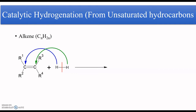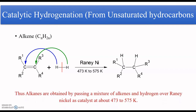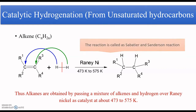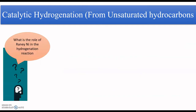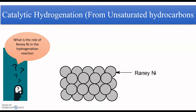On reaction with hydrogen, the hydrogen-hydrogen single bond will break and the hydrogens will be added across the carbon-carbon double bond, so that the double bond becomes a single bond. This reaction is catalyzed by Raney nickel at around 473 to 575 Kelvin to give the corresponding alkane. This reaction is also called the Sabatier and Senderens reaction.